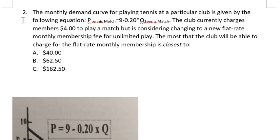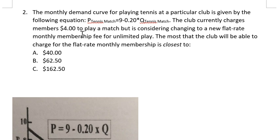Question 2. The monthly demand curve for playing tennis at a particular club is given by the following equation: P equals 9 minus 0.2 times Q. The club currently charges members $4 to play a match,